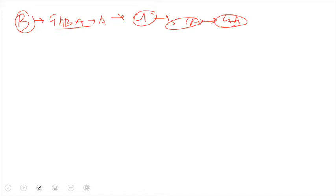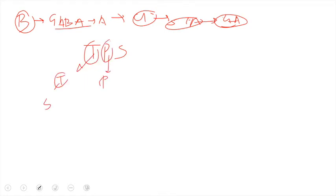Thiopental sodium consists of three components: T stands for thio — thio means sulfur; P means pentobarbital, which is the barbiturate used here; and sodium refers to sodium carbonate. Each component will be explained in detail.